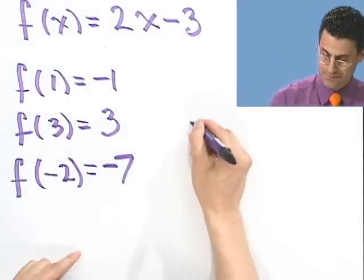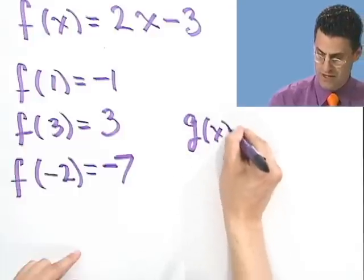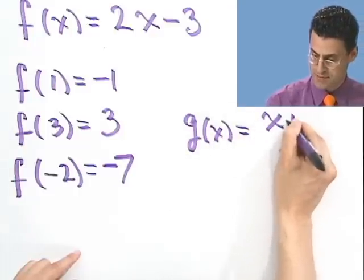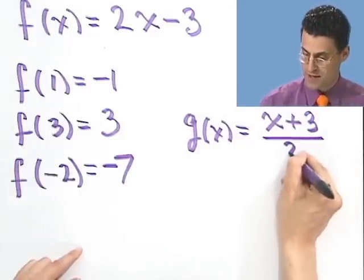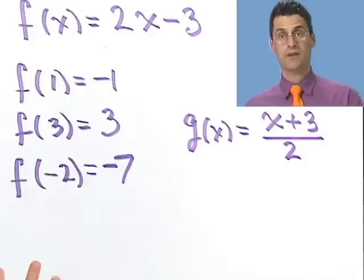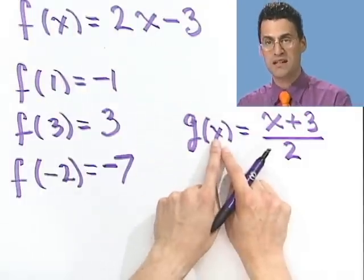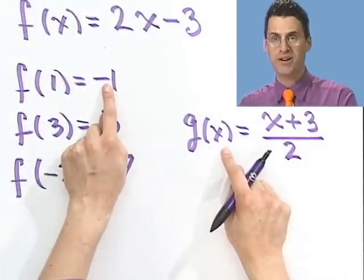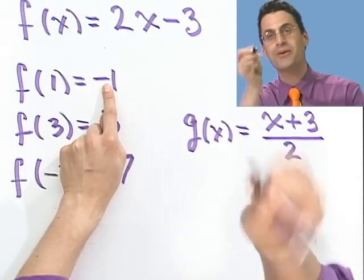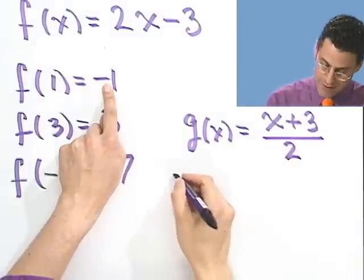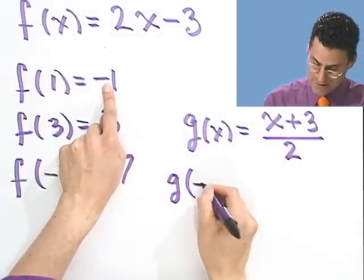Well, let's try this function. g(x) equals x plus 3, all divided by 2. That's a different function. Let's see what happens if we input into here the output of here, just for fun. You're like, this is fun. No, it is. Come on. Don't be so pessimistic.